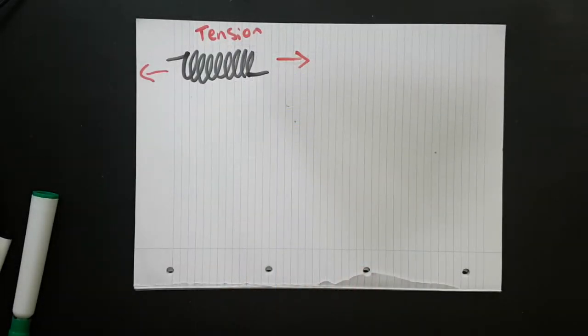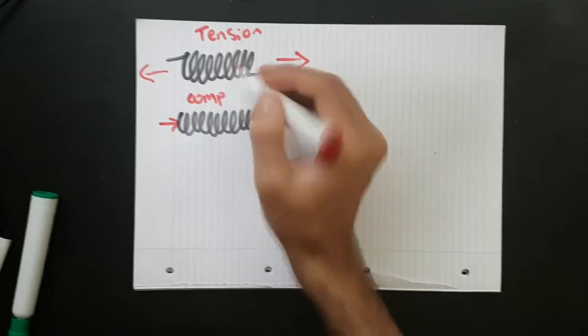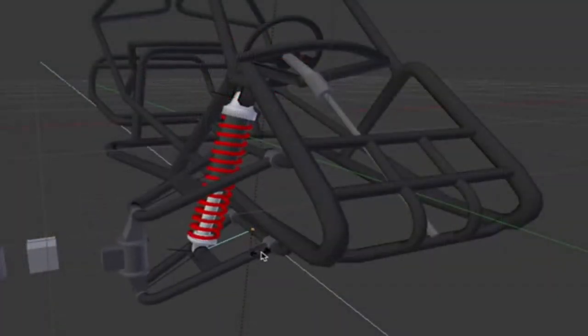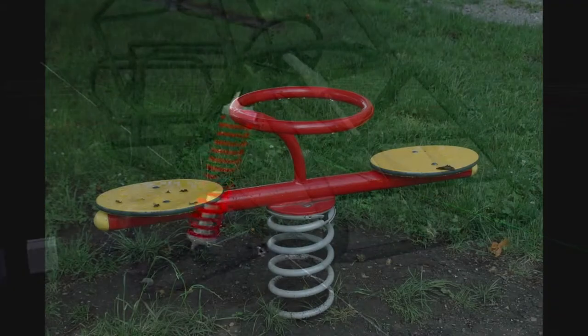Next up are compression springs. They are squished together or compressed. They are commonly used in mattresses and in the suspension systems of vehicles.